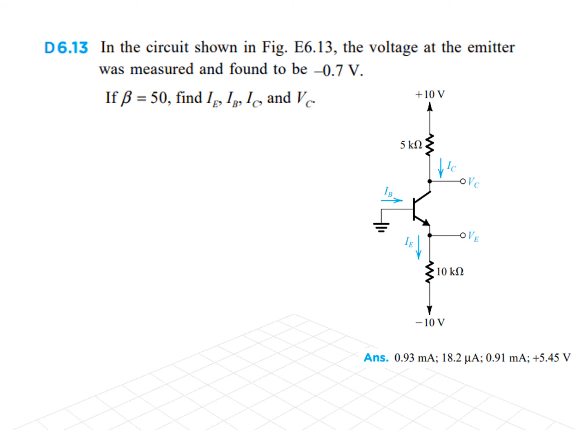Now, we come to exercise 6.13. In this circuit shown in figure, the voltage at the emitter was measured and found to be negative 0.7 volt. So, this voltage was found to be negative 0.7 volt. Beta is given. We have to find the three currents IE, IB, IC and the voltage VC here. Now, VE from the question is negative 0.7 volt. So, you can see from here we can straight away now find IE because this voltage is given.